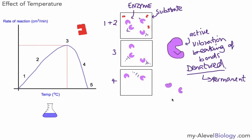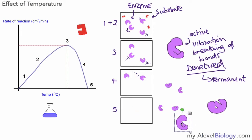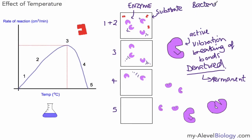Moving on to part four, more and more enzyme molecules are becoming denatured, giving a much slower rate of reaction. By the time we reach part five, all of the enzymes have become denatured — the active sites have all changed and the reaction stops. This is why it's important for your body temperature not to be raised too much: enzymes work at an optimum temperature of around 37 degrees.